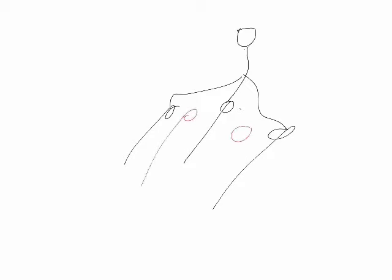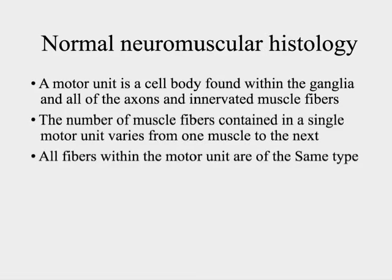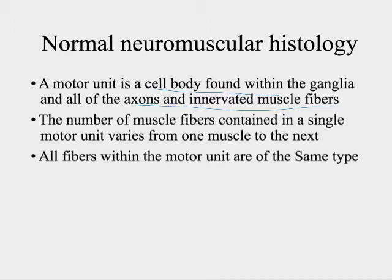You have a motor unit. A motor unit consists of a cell within the anterior horn, and that cell will have axons that go to various different muscle fibers. There may be other muscle fibers in between each of these that are innervated by a different nerve, so they would be part of a different motor unit. The motor end plate, the axon, and the nerve itself — all of this consists of one motor unit. A motor unit is that one single cell and every muscle fiber that it's connected to.